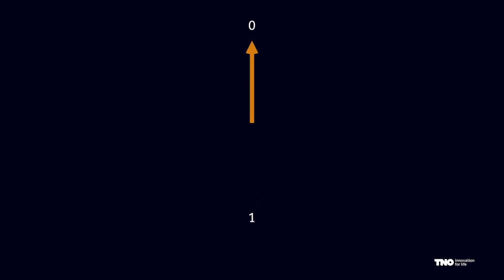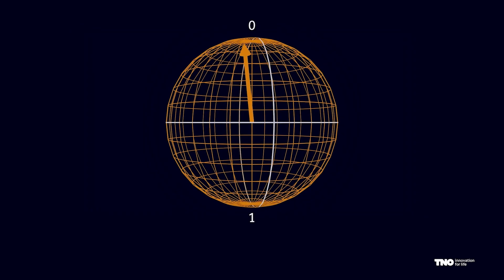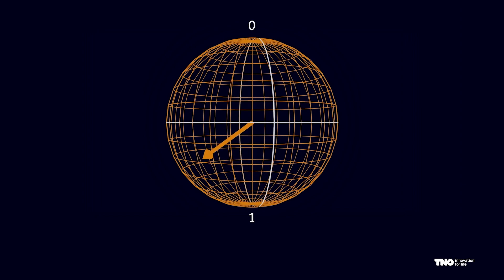Quantum information is not described by bits which can be zero or one but rather by qubits which can be anything on the sphere around zero and one. This is what we call a superposition of zero and one and if you now get the intuition that quantum information can be more powerful than classical information, you're right.